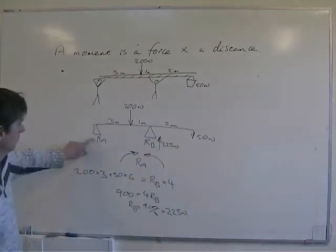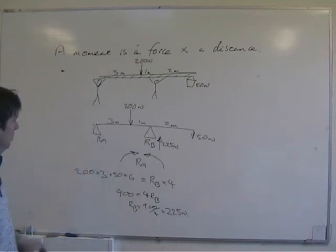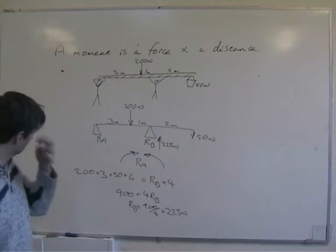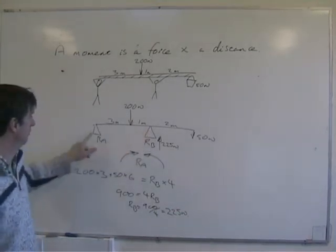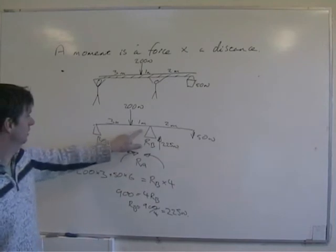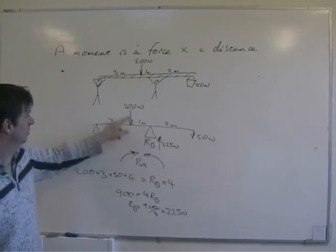Now, to find what RA, what he's putting into this thing, there's two ways of doing it. You can take moments about RB, and then you'll have 4 times RA.